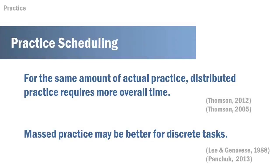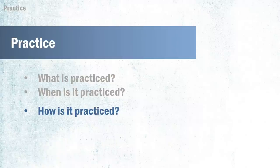Overall, more time will be required for distributed practice. For example, walking for five minutes and resting for ten minutes would require continuing for one and a half hours to get 30 minutes of practice total. But we can also look at this as practicing walking for 10 minutes at three different times in the day, or for 15 minutes twice a day. For discrete tasks, the effect of massed versus distributed practice is less clear. More current research suggests that for a discrete skill, massed practice can be appropriate.